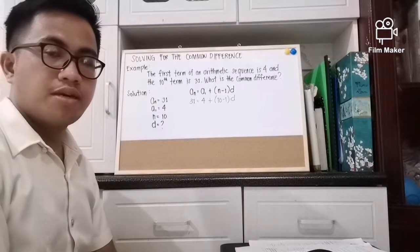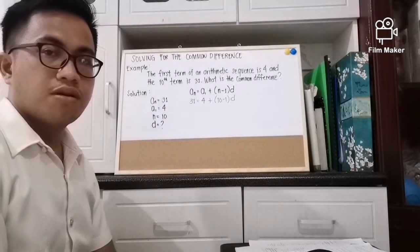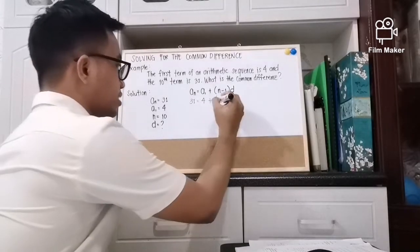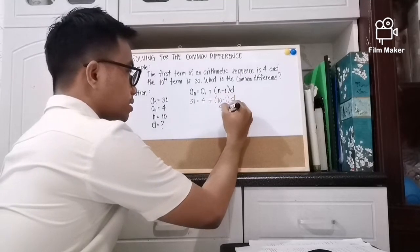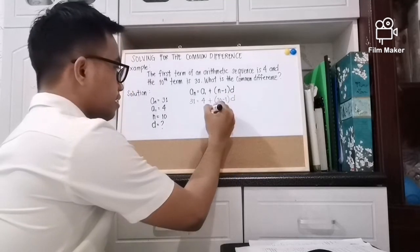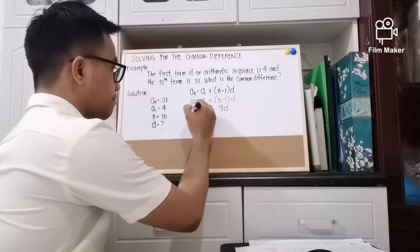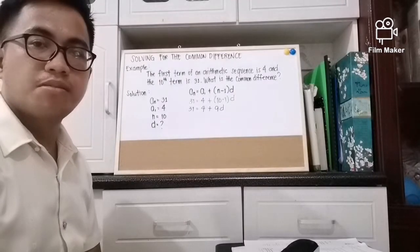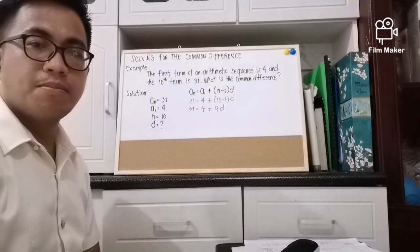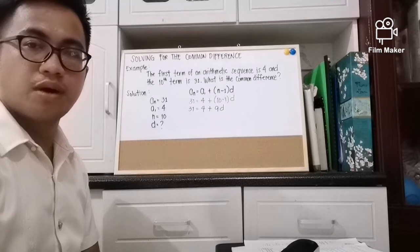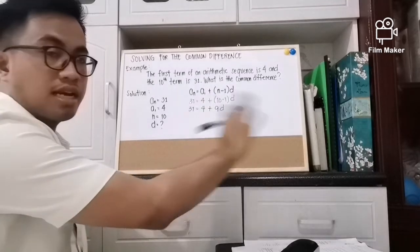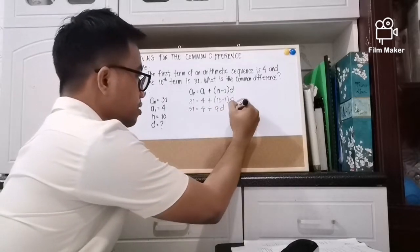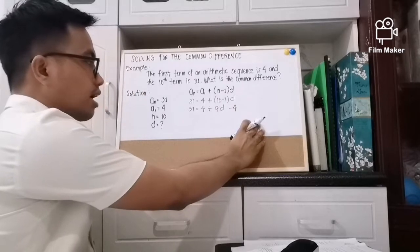Using PEMDAS, we first solve inside the parentheses: 10 minus 1 is 9, times d, that will be 9d. Copy everything that is left. Next, to separate numbers with variables from those without variables, we apply the Addition Property of Equality.